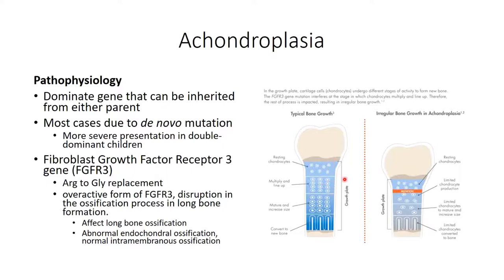In individuals with the receptor mutation, this slows proliferation. As a result, the osteoclasts catch up to the leading front of the epiphyseal growth plate much earlier on in adolescence, resulting in premature fusion of the growth plate and stunted growth.